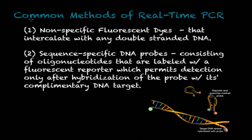There are two common methods of real-time PCR. The first one is non-specific fluorescent dyes that intercalate or bind with any double-stranded DNA, and you can therefore detect the amplified product in real-time.